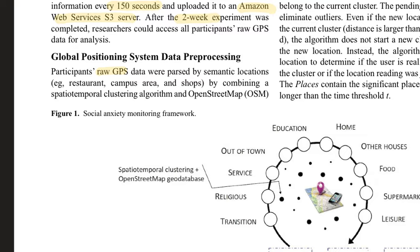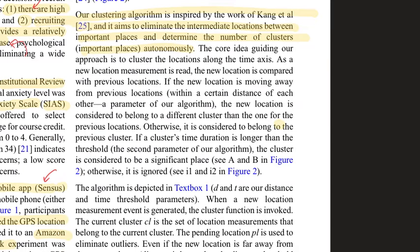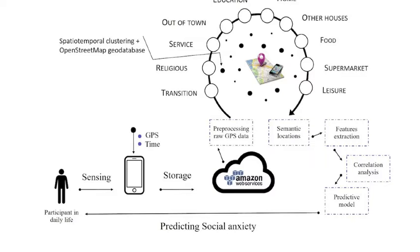With the raw GPS data, they used a clustering algorithm and the OpenStreetMap geodatabase to parse semantic locations from raw location data. The idea is to eliminate intermediate locations and automatically determine the number of clusters or important places. The paper provides further details on this process before presenting the system overview.